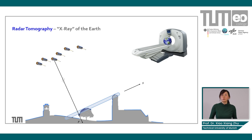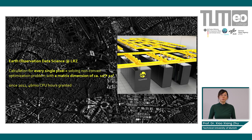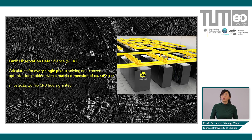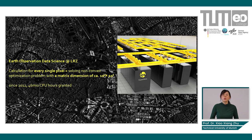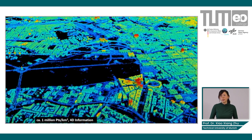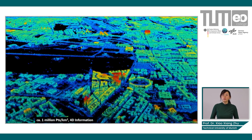This is computationally very demanding. Resolving every pixel is like solving a non-convex problem with a dimension of around 100 times 1 million, so we need HPC for information retrieval. Recent developments also involve deep learning to replace this procedure and make it much more computationally efficient. The result is this kind of 3D reconstruction of cities — here you see the example of Berlin using half-meter TerraSAR-X data, where color represents height.